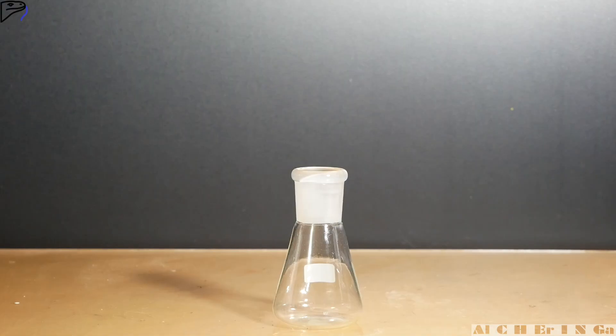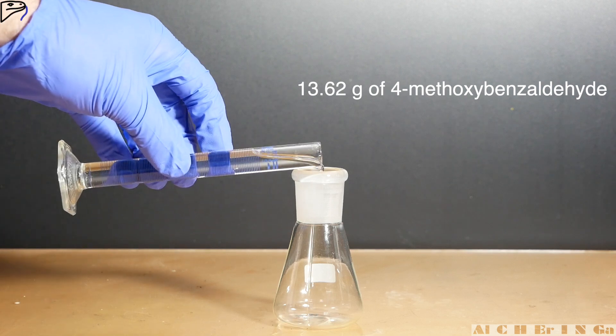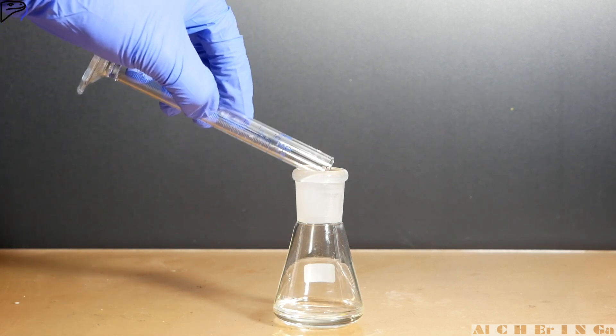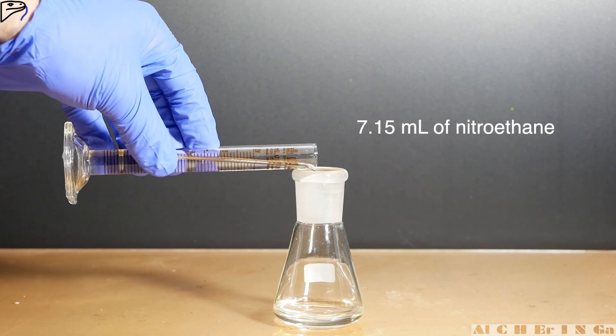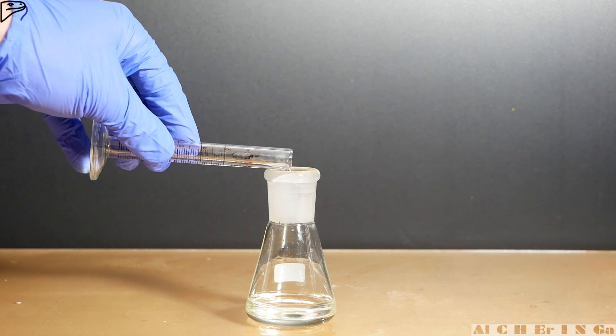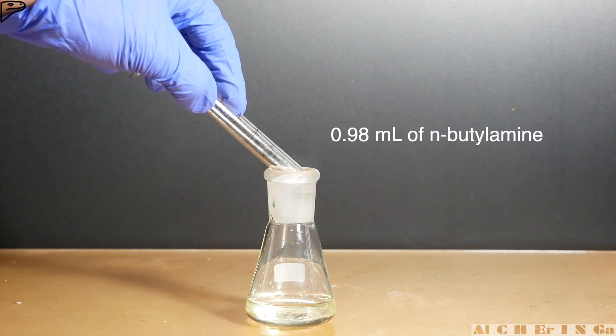To start the experiment, add 13.62 grams of 4-methoxybenzaldehyde into a suitable glass container. To it, add 7.15 milliliters of nitroethane. Finally, carefully add in 0.98 milliliters of N-butylamine.